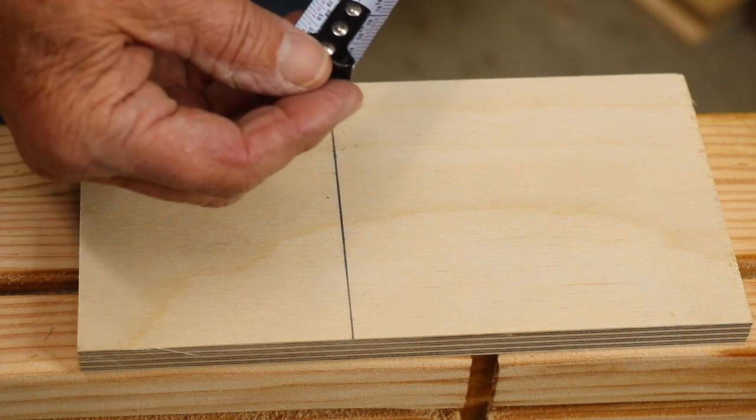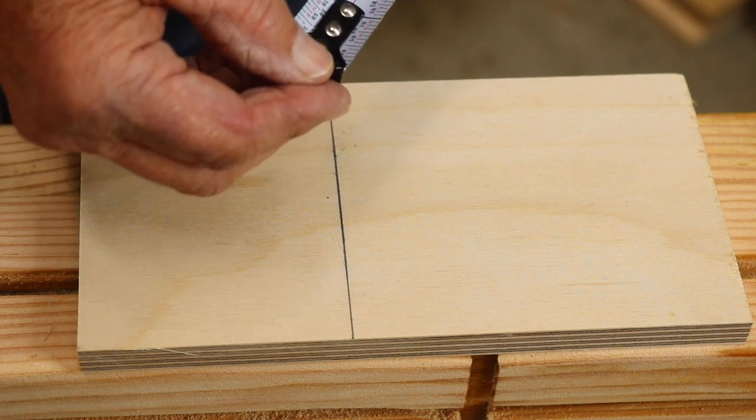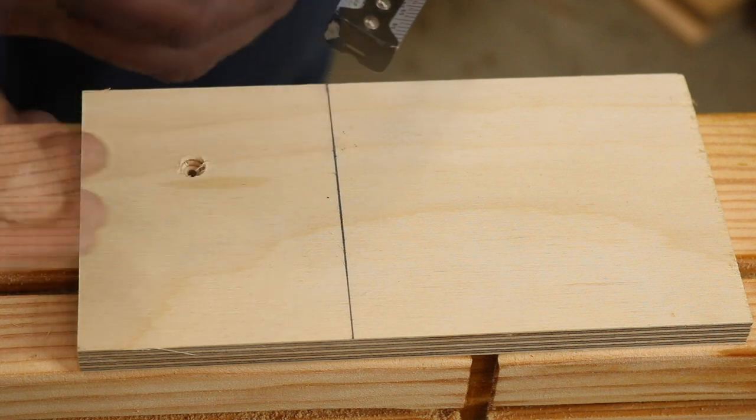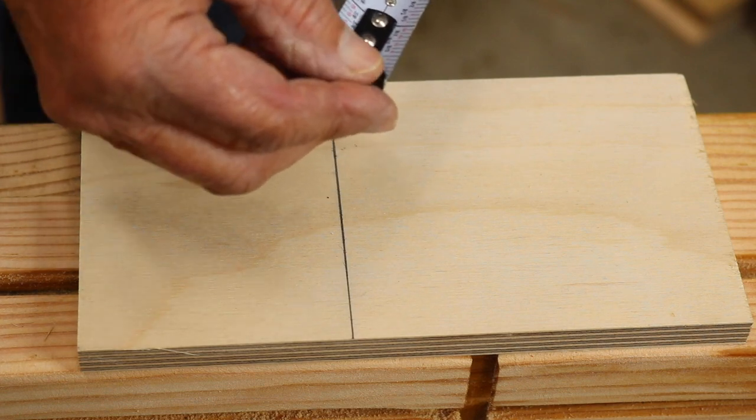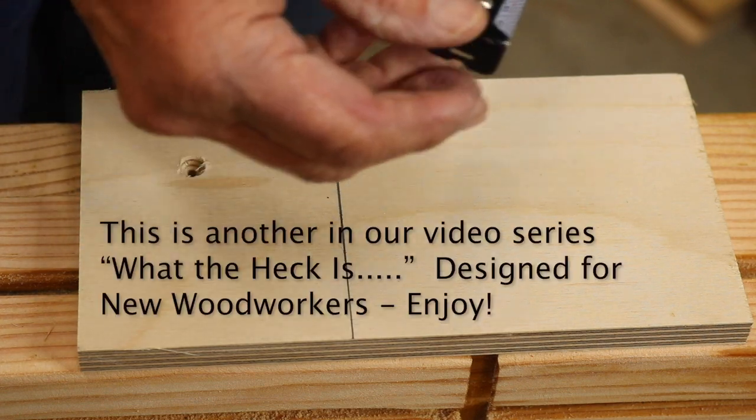What the heck is the reason for the loose end or hook on my tape measure? So you may have noticed that on your tape measure, this end piece is loose. Well, how can I get an accurate measurement if that thing is loose?